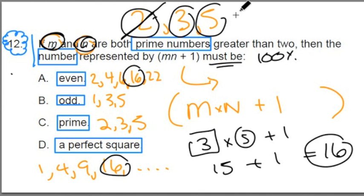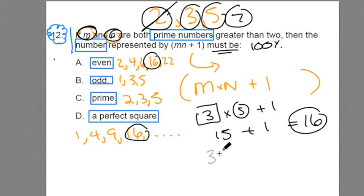So if we test it out again, what's another prime number? 7. Well let's see what happens. 3 times 7 plus 1. 3 times 7 is 21. Plus 1 is 22.